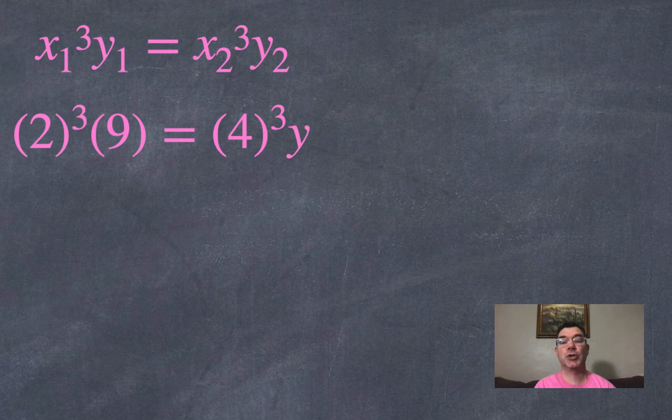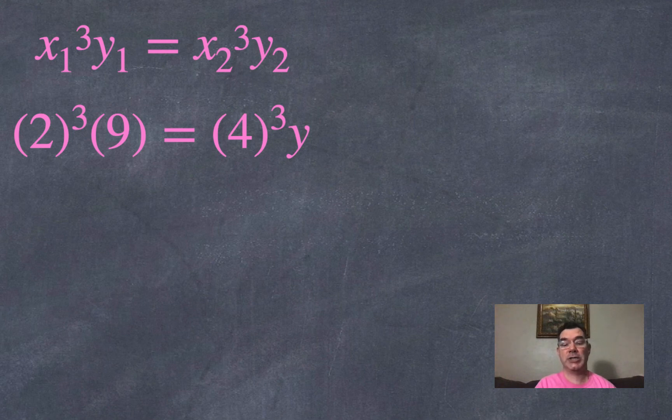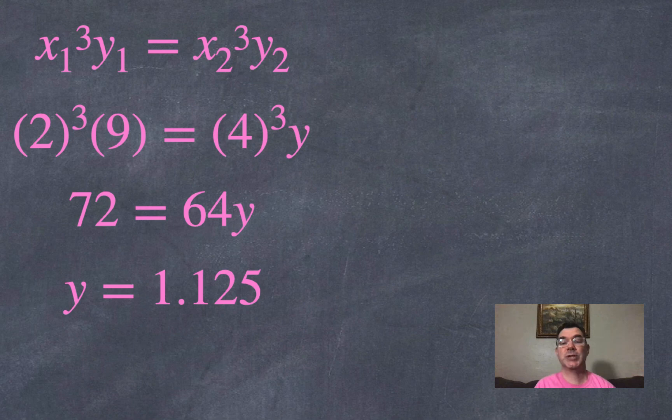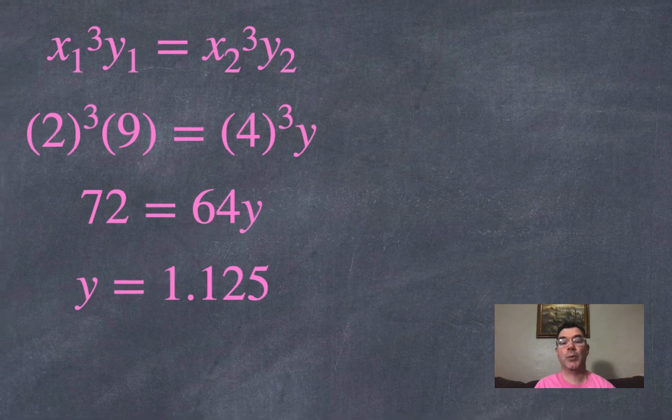The first x was 2, the first y was 9, and the second x was 4, I just need to figure out what the second y was. So 72 is going to equal 64y if I simplify everything, and then dividing by 64 on both sides gives me y equals 1.125.